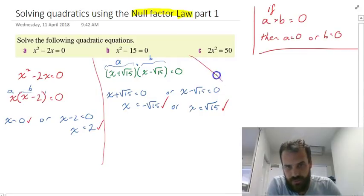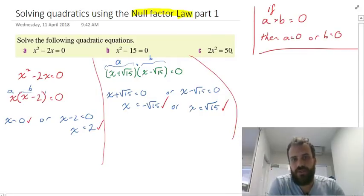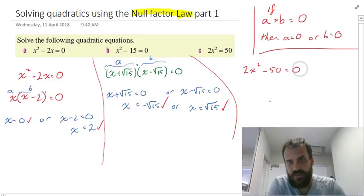Last question: 2x² = 50. Now, where's the zero? How do we use the null factor law if it's not equal to zero? Well, I can make it equal to zero because I can write it as 2x² - 50 = 0.